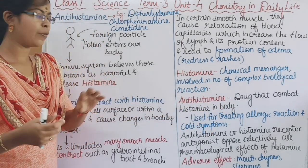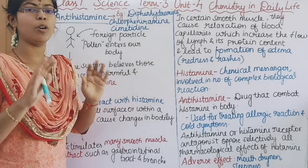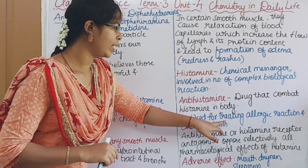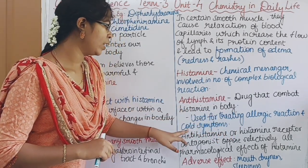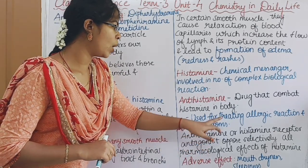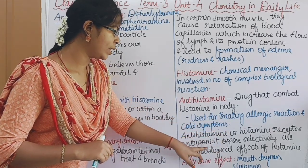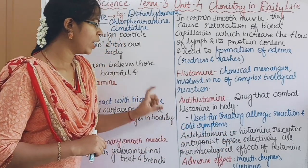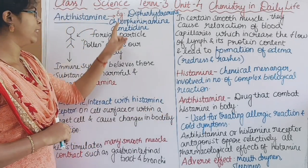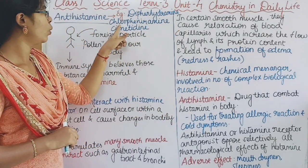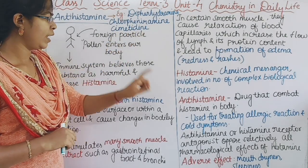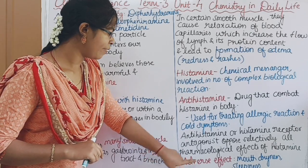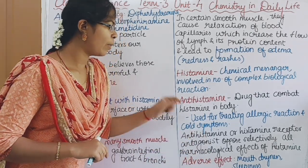The antihistamine keeps histamine release at a low value. Antihistamines, or histamine receptor antagonists, selectively oppose the pharmacological effects of histamine. Examples of antihistamine drugs include Diphenhydramine, Chlorpheniramine, and Cimetidine. Side effects include mouth dryness and sleepiness.